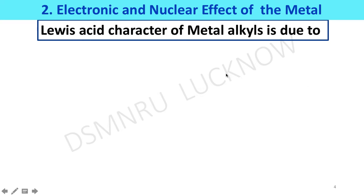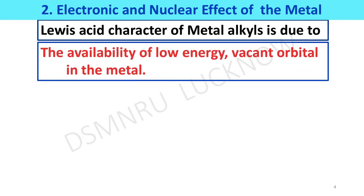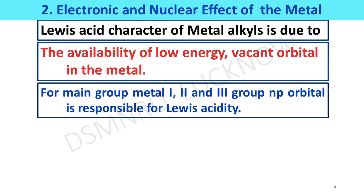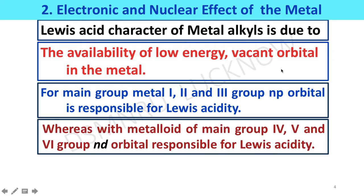Now we will discuss about the electronic and nuclear effects of the metal. Lewis acid character, or electron-seeking property, of metal alkyls is due to the availability of low-energy orbitals on the metal. For example, in main group metals of group 1 to group 3, the p-orbital is responsible for Lewis acidity. In the case of transition metals from group 4 to 6, the d-orbital is responsible for Lewis acidity.